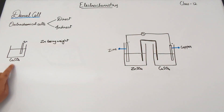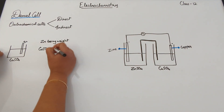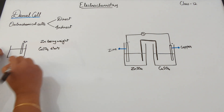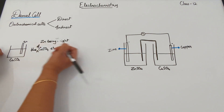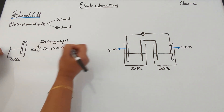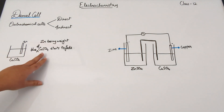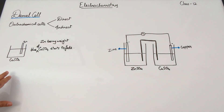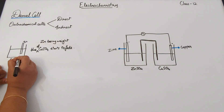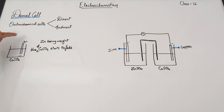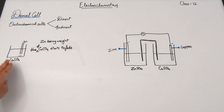The second thing observed is that over time the blue color of copper sulfate starts to fade. What happens is zinc is losing weight, the blue color of copper sulfate starts to fade, and copper starts to get deposited on the zinc electrode or you start seeing it settling at the bottom.